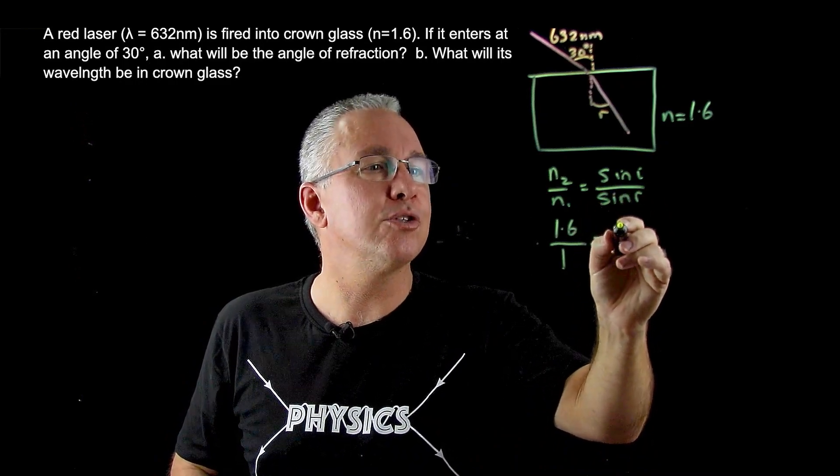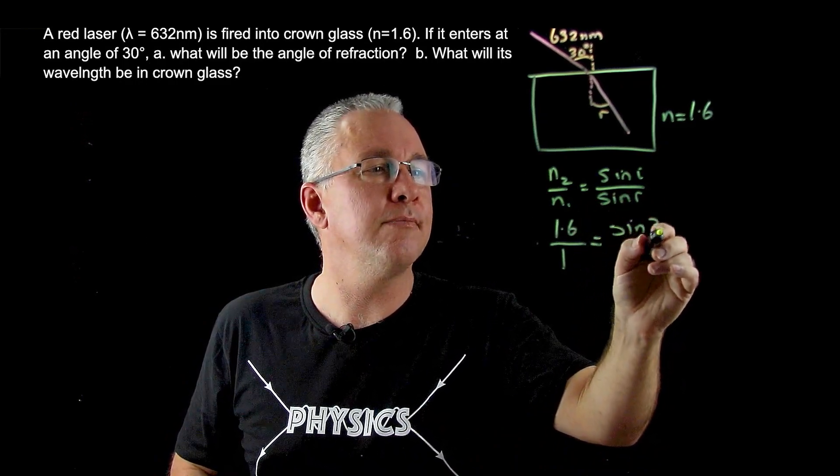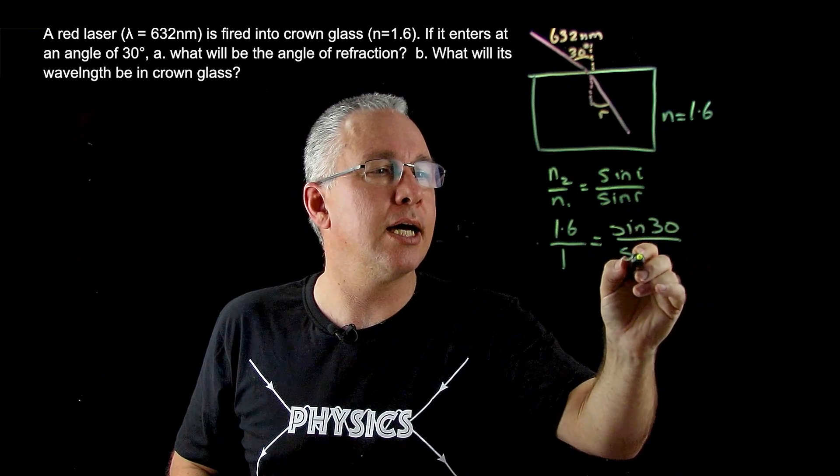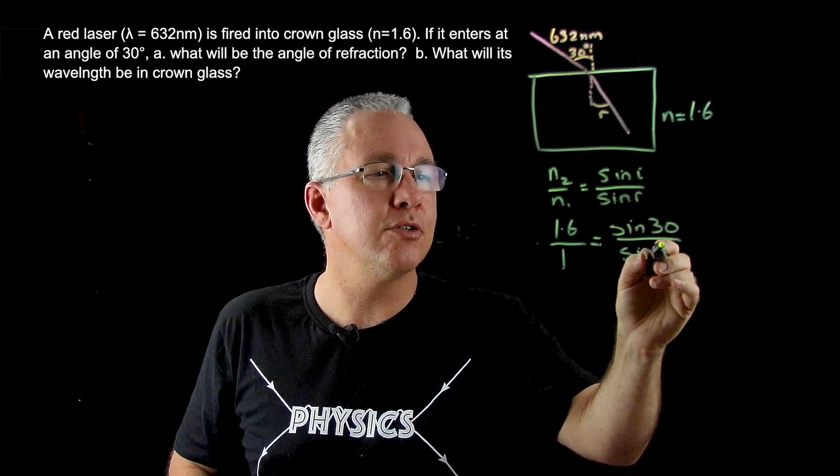In this case, we have sin I, which we're told is sin 30. And of course sin R is what we're interested in.